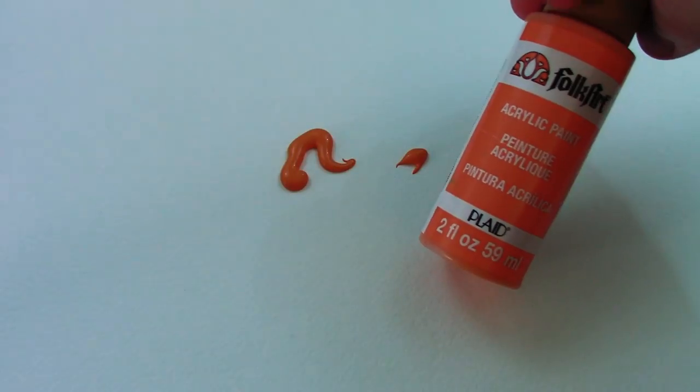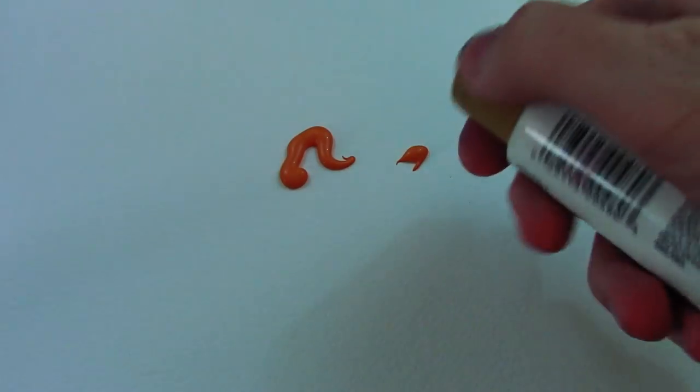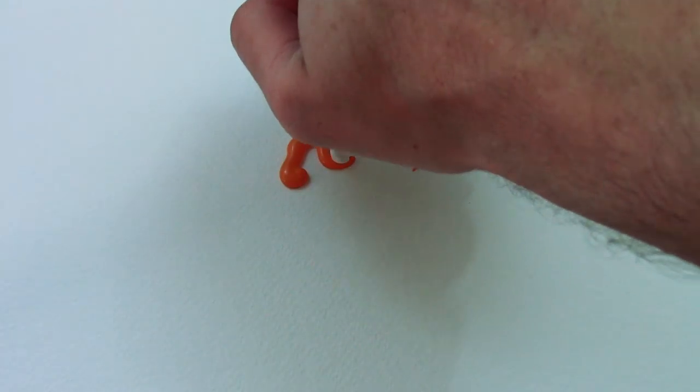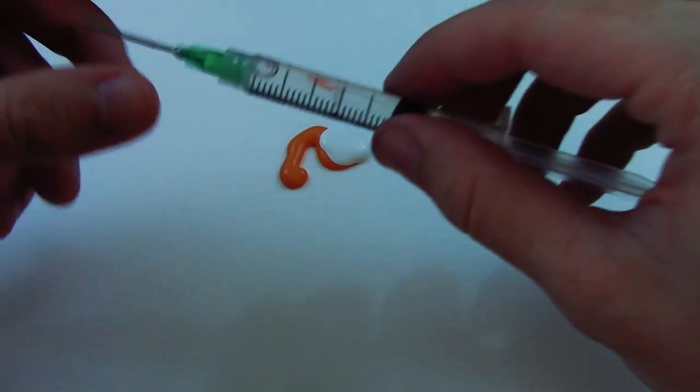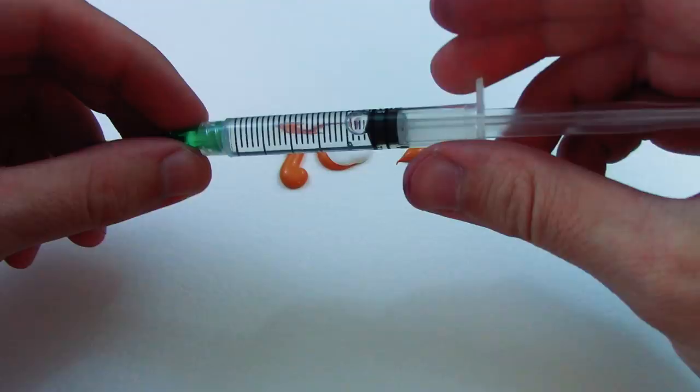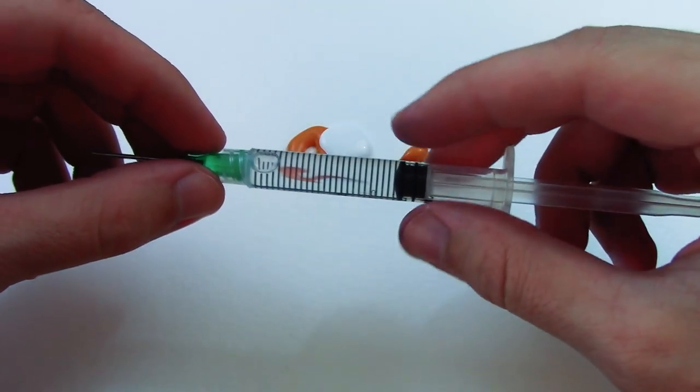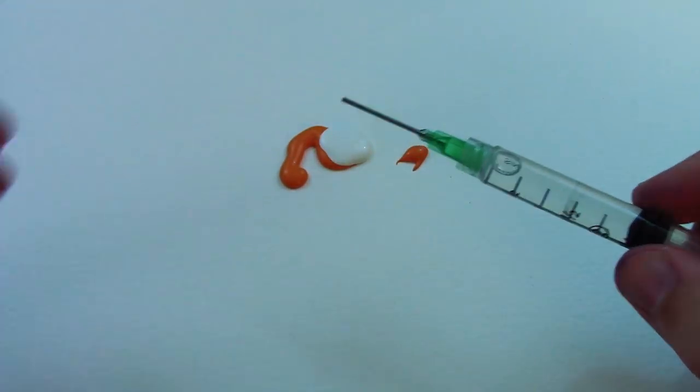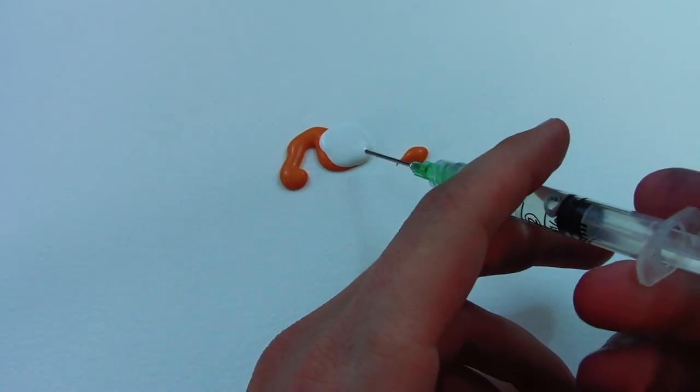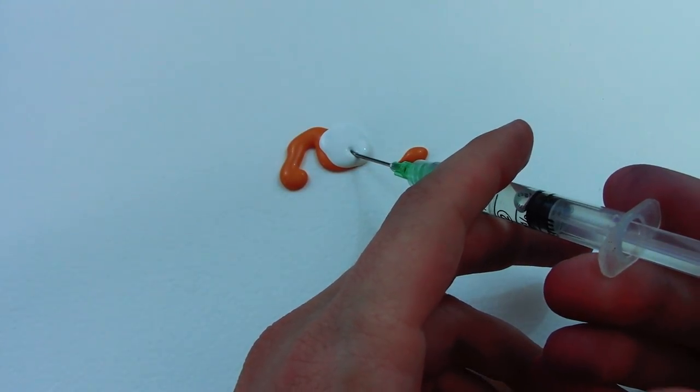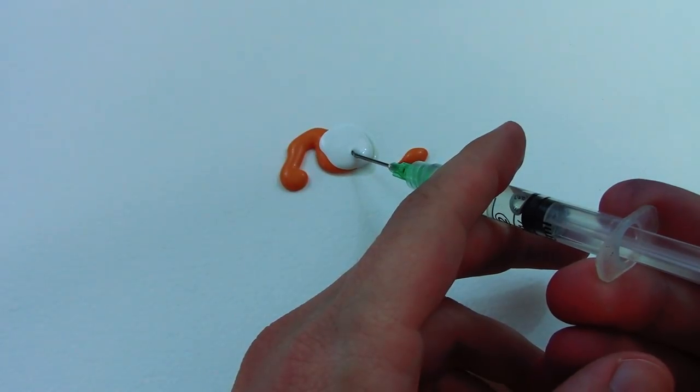Some orange paint. Not sure what the color is called. Maybe a little bit of white. And I have no idea what this will do, but I have a syringe here with Gamsol in it, which is a type of paint thinner. So I want to take this syringe and plunge it into the center of the paint and squirt some of it in there,